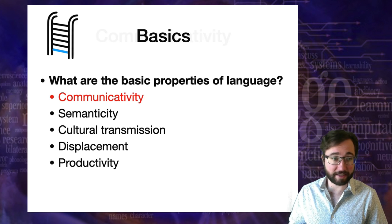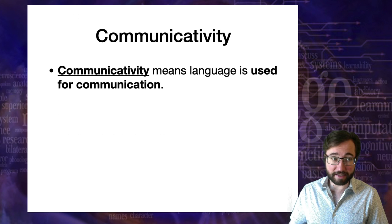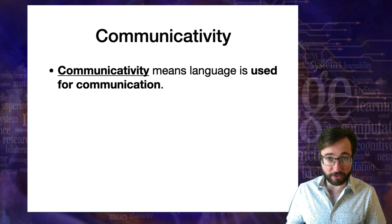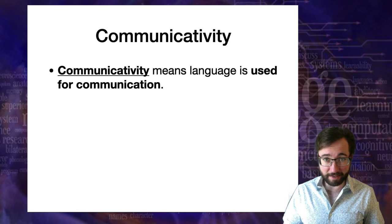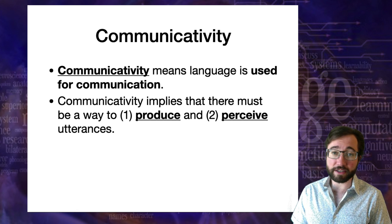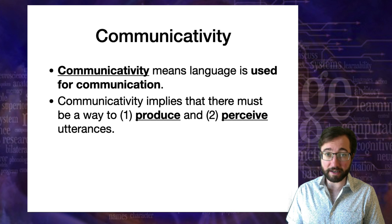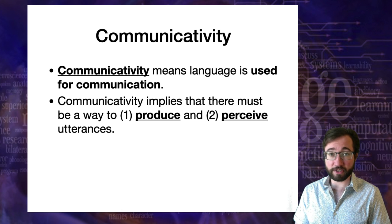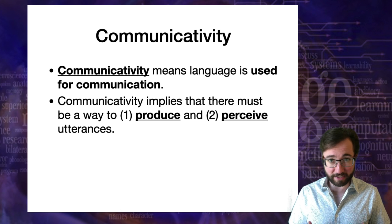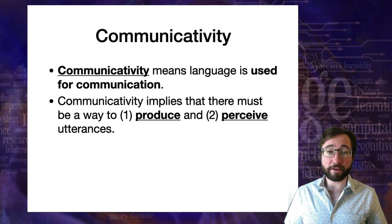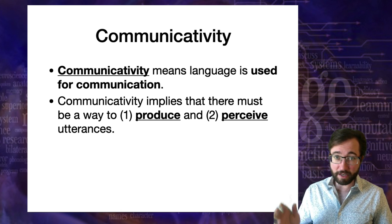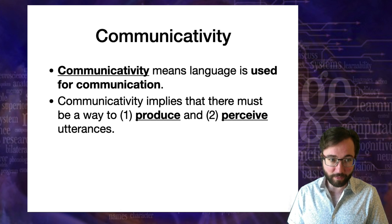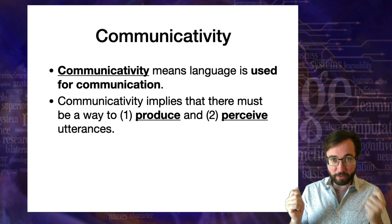Communicativity is the first and most basic property. It just means that you have a system which is used for communication. Communicativity implies there must be a way to produce and perceive utterances. An utterance is just anything that someone says or writes. There has to be some way to create a physically observable signal, and a way for someone else to perceive that utterance — by hearing or reading it. A system can only be communicative if there's a way to produce and perceive, otherwise there's no way for one person to communicate with another.